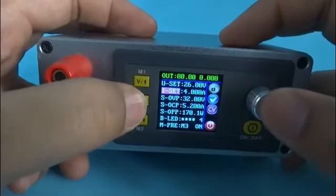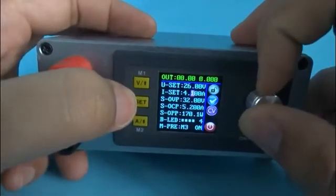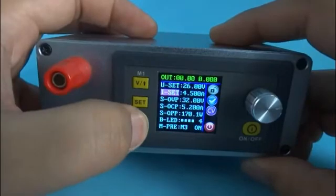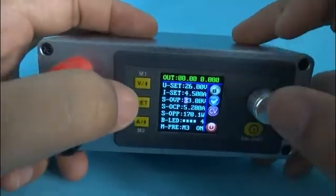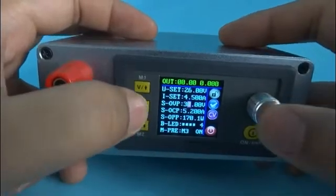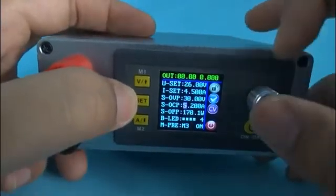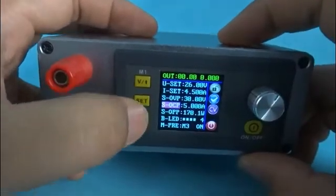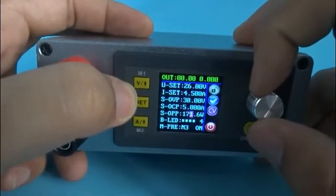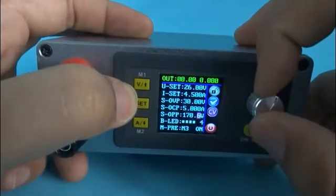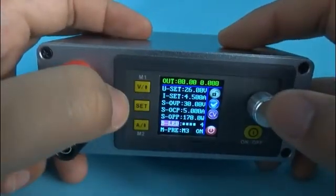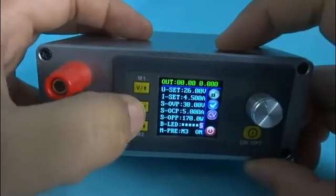4.4 amps, 4.5. OAP 30. OCP 5. OPP 178, 17. LED brightness 5.0.